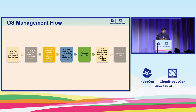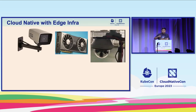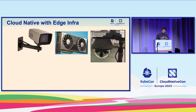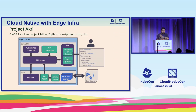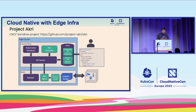Now we need to talk about edge infrastructure. Edge infrastructure means there could be devices that applications on Kubernetes need to access — cameras, GPUs, sensors on cities. These are called leaf devices. To handle this, we use another CNCF project: Project Akri. Akri lets you expose those devices — such as IP cameras and sensors — as resources in the Kubernetes cluster. Simply put, Akri finds those devices and you can use them.